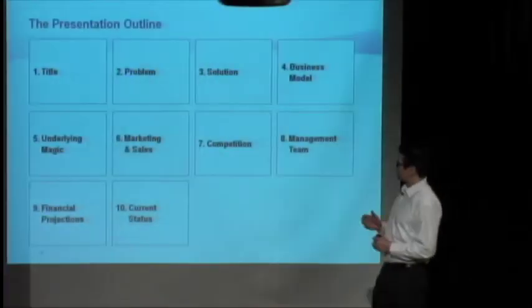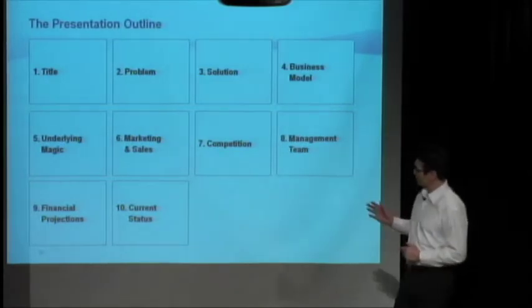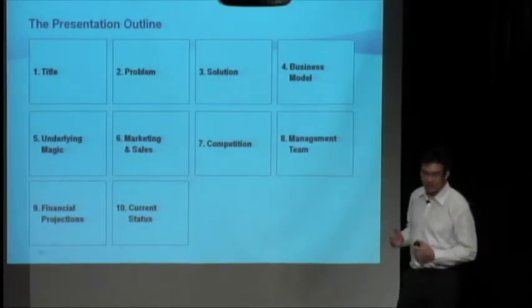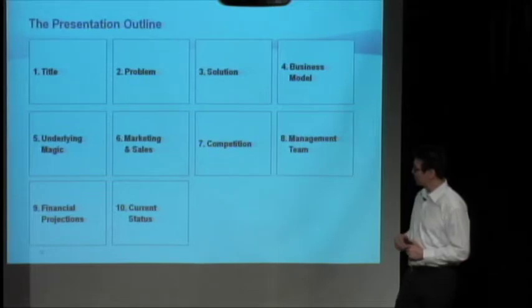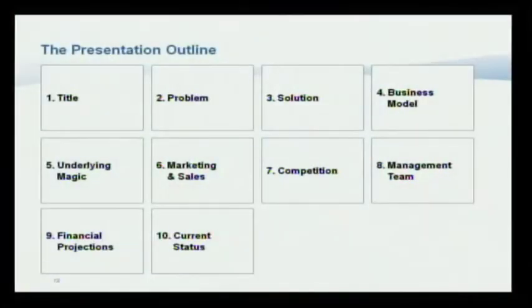So typically in a presentation outline, there are ten, there might be eleven slides, but typically there are ten. It starts with the title, which is the intro of what your company is about and what you want to do with your company and why they should be interested in you.